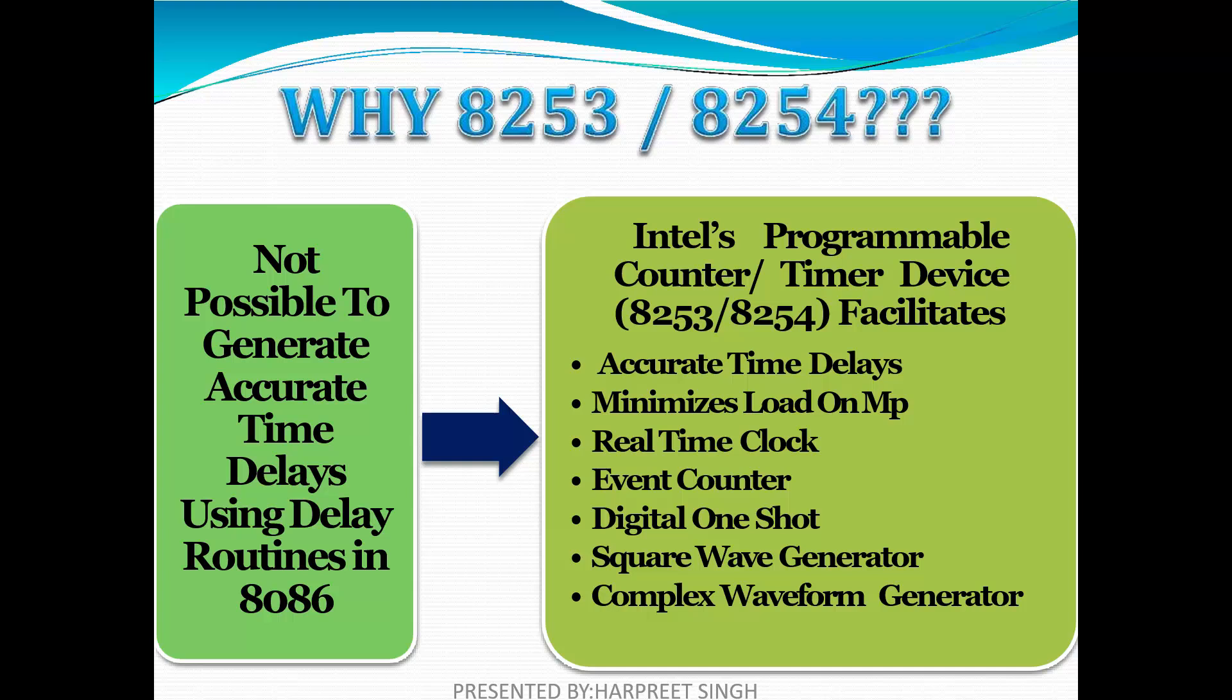Intel proposed a dedicated programmable counter, the 8253 and 8254, which facilitates the following properties. It produces accurate time delays, minimizes the load on the microprocessor so the microprocessor can engage in other activities, has real-time clock processing capability, has its own event counter, and can operate in six modes of operation such as interrupt on terminal count, programmable monoshot, rate generator, square wave generator, software trigger strobe, and hardware trigger strobe.